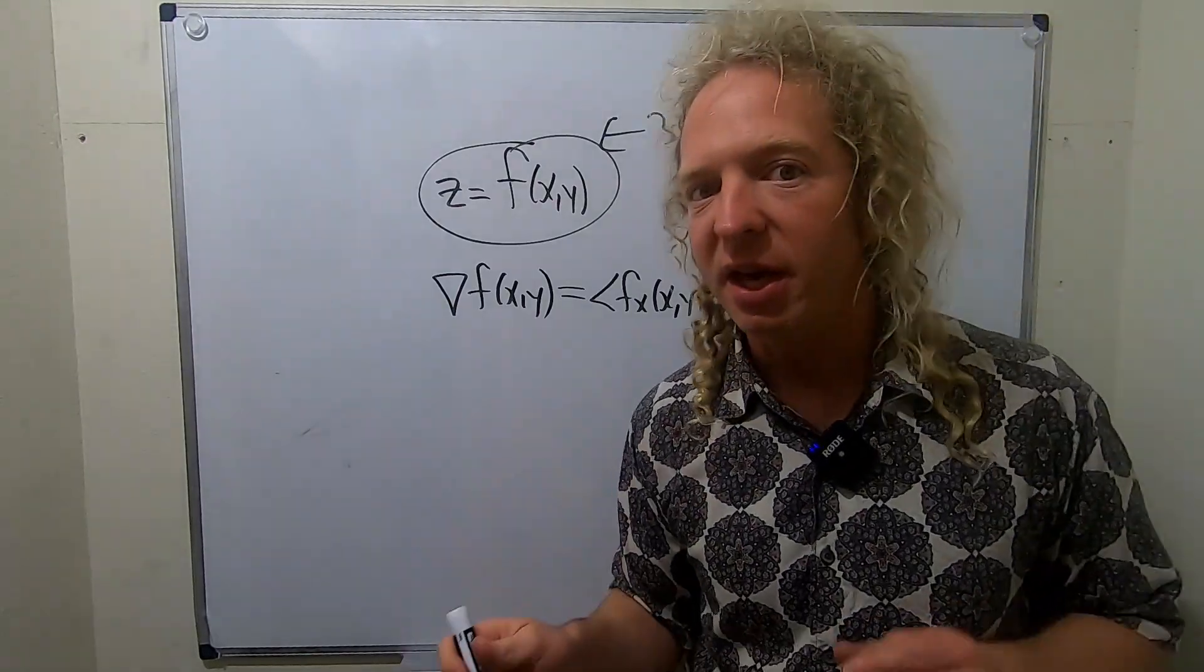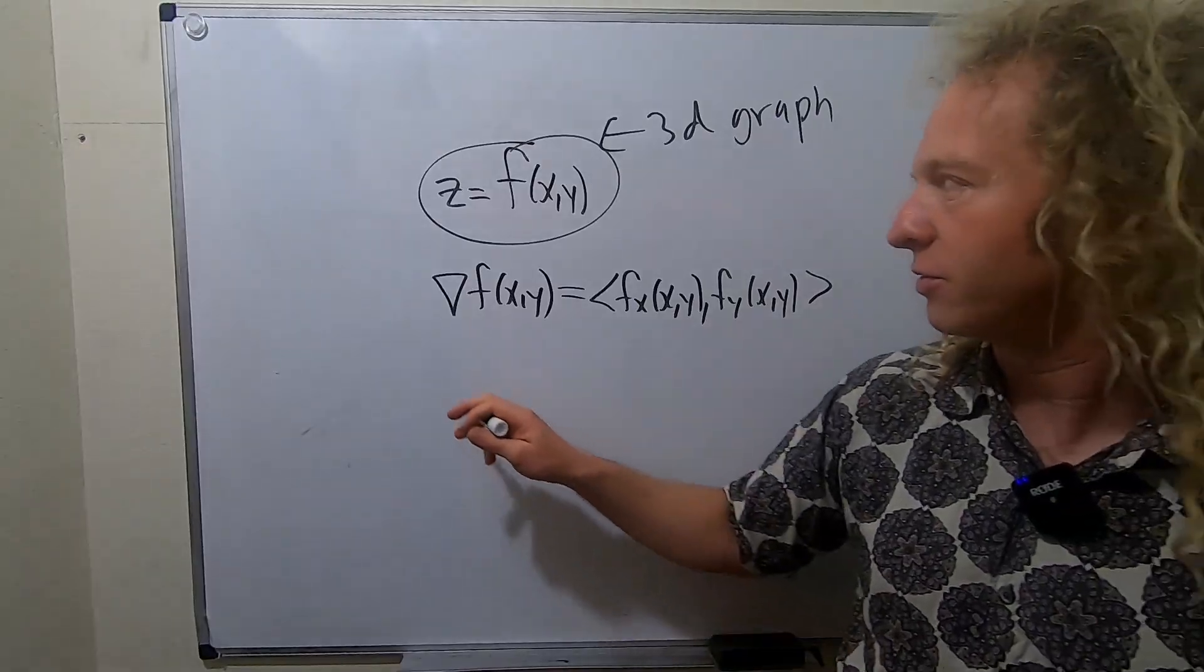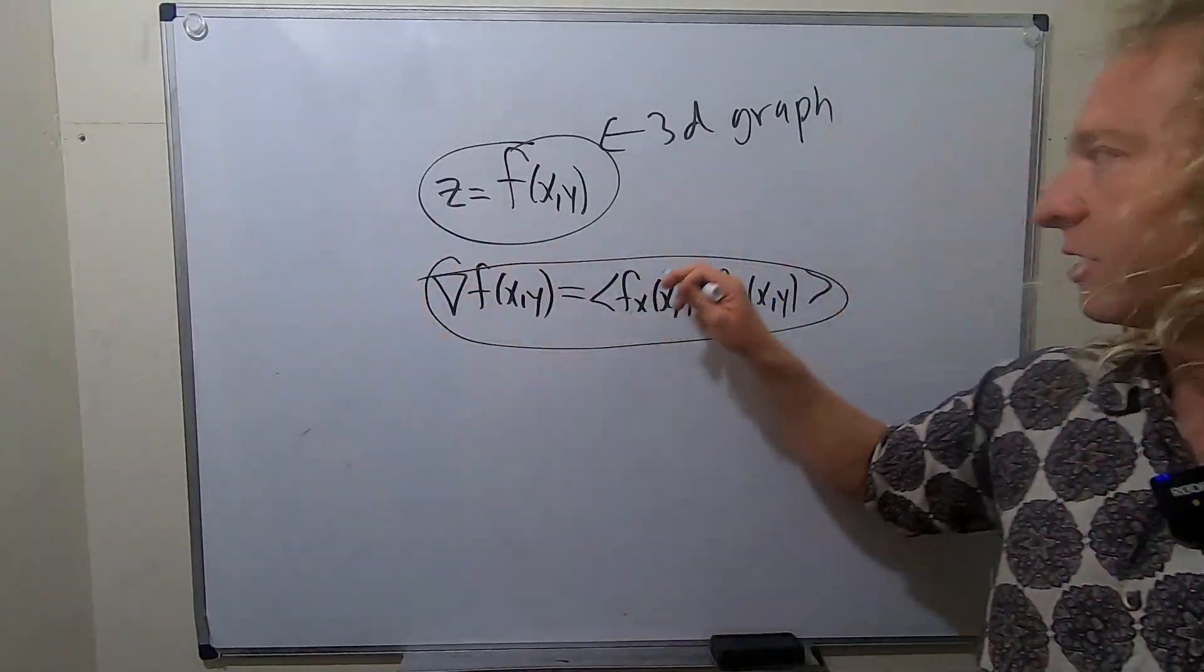So, here's the key. This is a two-dimensional vector. So, this is a 2D vector.